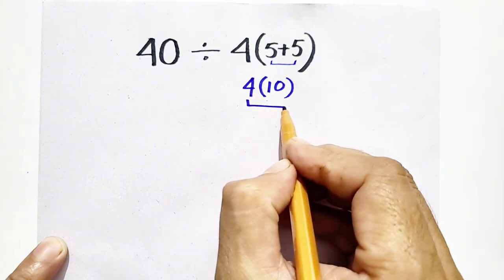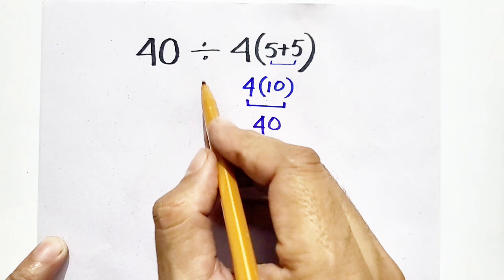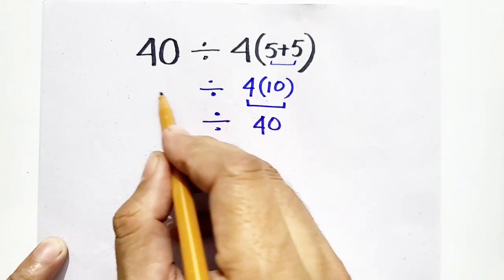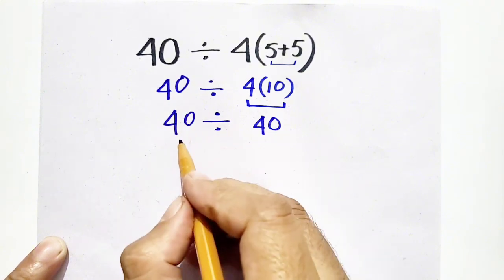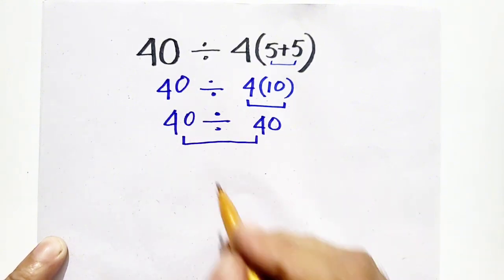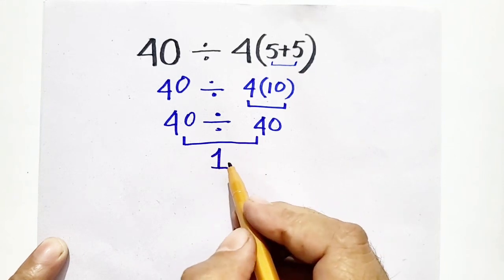So 4 times 10 is 40, divided by 40. 40 divided by 40 is equal to 1, which is our solution.